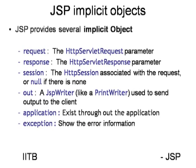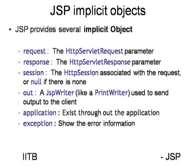Finally, there is the exception implicit object. JSP pages can handle exception information — for example, if a searched page is not found. You can use the exception object to display information about the particular exception. These are the implicit objects in JSP.